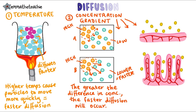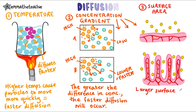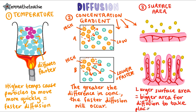Our third factor affecting the rate of diffusion is surface area. Having a larger surface area provides a bigger area for diffusion to take place across and therefore speeds it up. Let's take a look at both of these diagrams, where food molecules are being absorbed into the bloodstream.